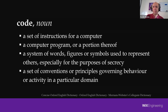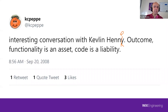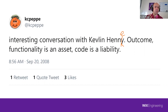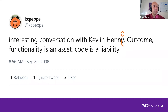I want to pick up on a conversation from about 12 years ago with Kirk Pepperdine, a Java performance specialist who contributed to both the 97 Things books. He said: 'Interesting conversation with Kevin — outcome of the conversation is that functionality is an asset and code is a liability.' This is really interesting because it's in contrast to something I've advocated for many years, which is that code is an asset — something that has value.